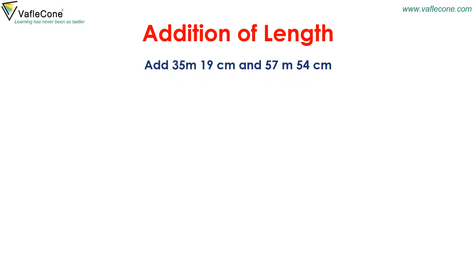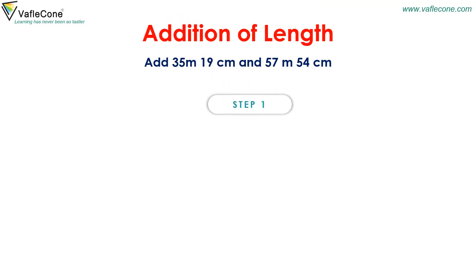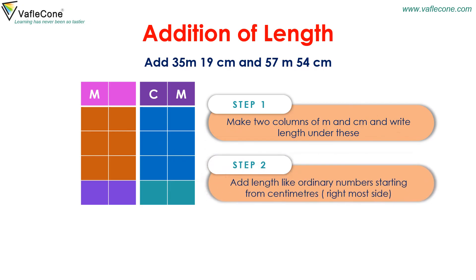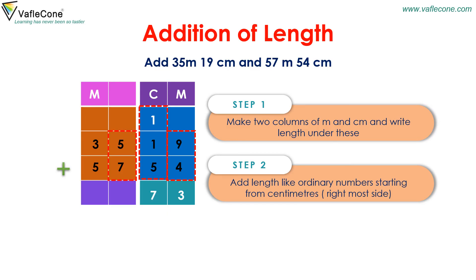Addition of length. Add 35 metres 19 centimeters and 57 metres 54 centimeters. Step 1: Make 2 columns of metre and centimetre and write the lengths under these. Step 2: Add lengths like ordinary numbers starting from centimeters. Place 35 and 57 in the metre column and 19 and 54 in the centimetre column. Adding: 9 plus 4 equals 13, place 3 carry 1; 1 plus 1 plus 5 equals 7; in metre column 5 plus 7 equals 12, then 1 plus 3 plus 5 equals 9. The answer is 92 metres and 73 centimeters.